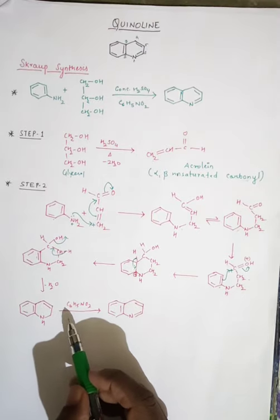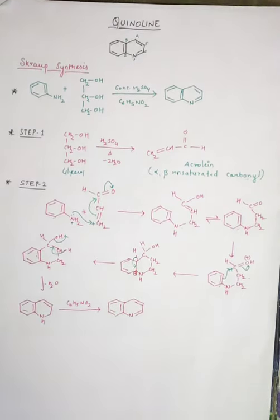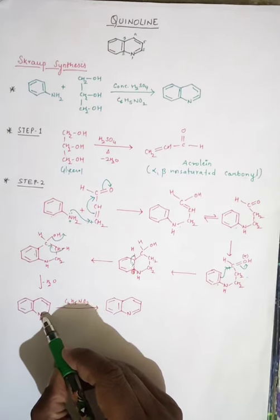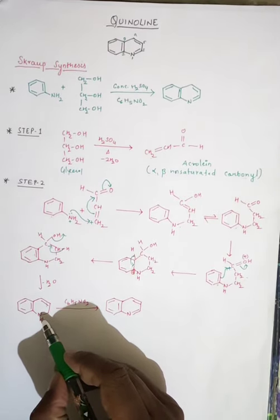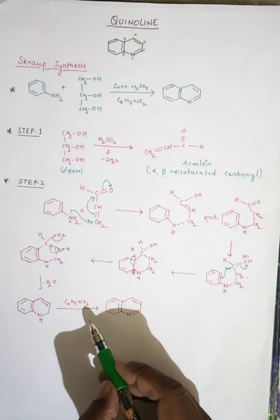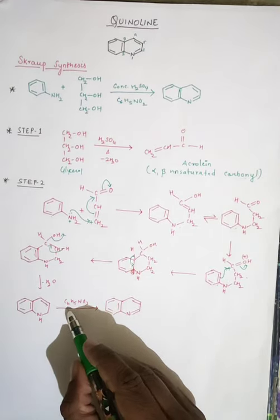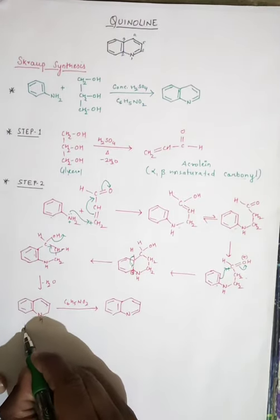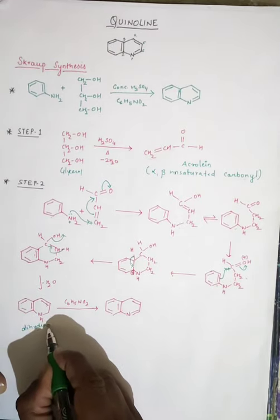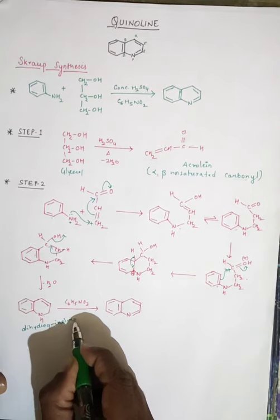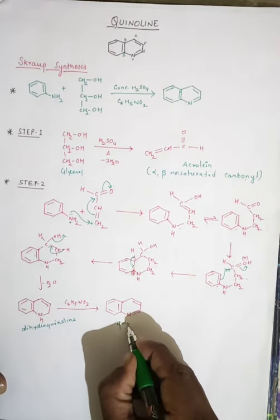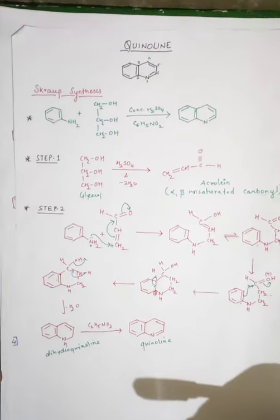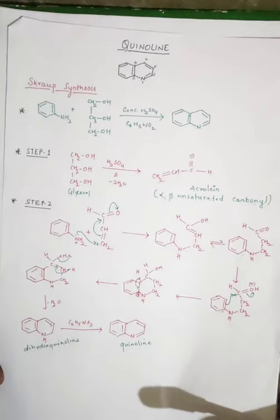The requirement now is addition of one more double bond. We have dihydroquinoline at this stage. When this dihydroquinoline is treated with C₆H₅NO₂, we get quinoline. This completes the Skraup synthesis.